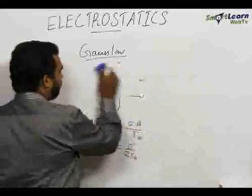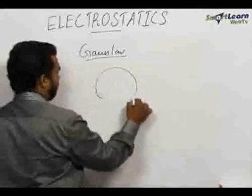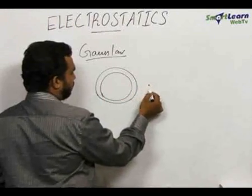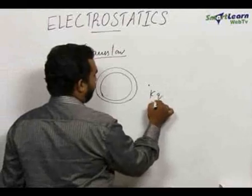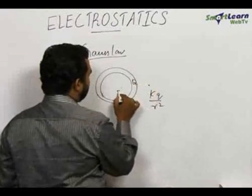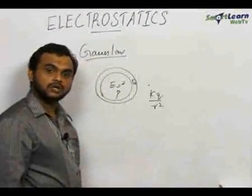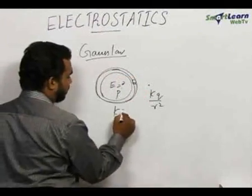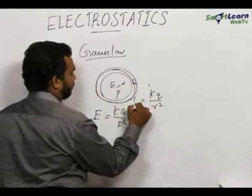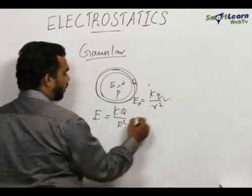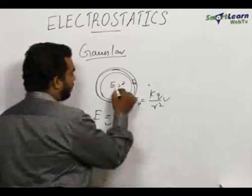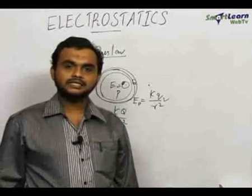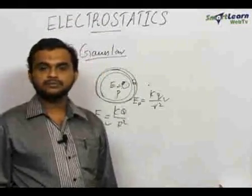Similarly, we can find the electric field due to a shell. At an outside point, the electric field is kq by r squared, where q is the charge on the shell. At a point inside the shell, the electric field is zero, because any Gaussian surface inside does not enclose any charge. On the surface of the shell, the electric field is also kq by r squared, where r is the radius. Thus, Gauss's law helps us in a great way to find the electric field due to symmetrical charge distributions.